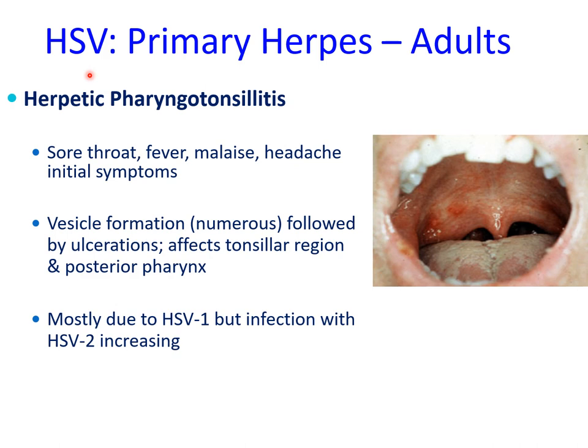Herpes simplex virus infections in adults: primary herpes is characterized by herpetic pharyngotonsillitis. Initially there is sore throat, fever, malaise, headache — the classical acute viral infection symptoms — and the oral manifestations start with vesicle formation followed by ulcerations as in children. However, these ulcerations primarily affect the tonsillar region and the posterior pharynx.